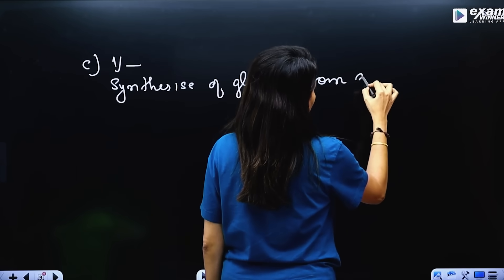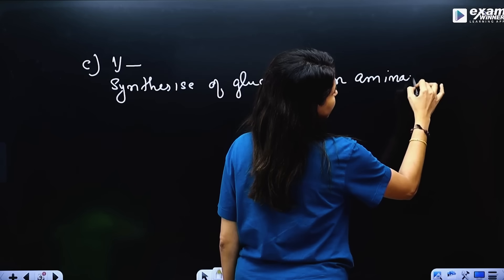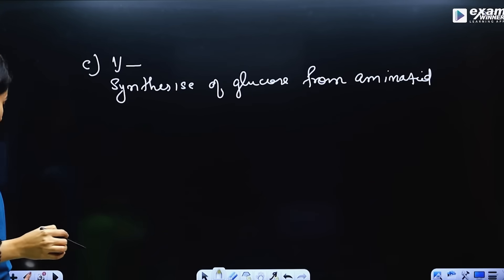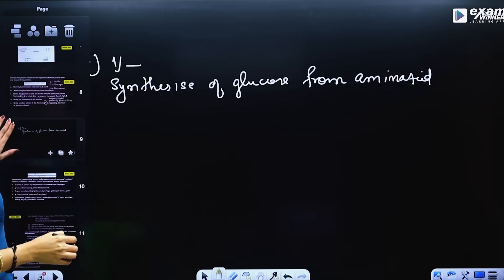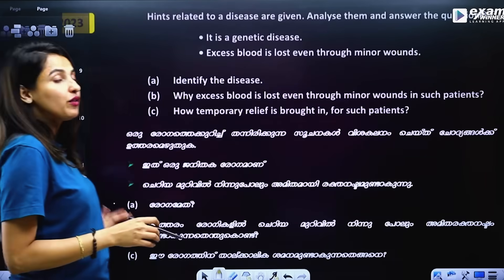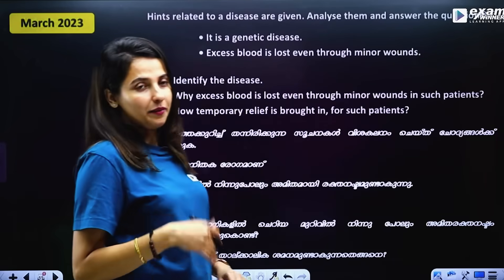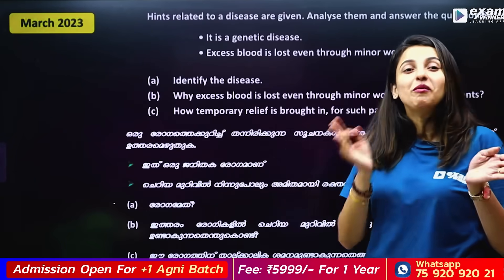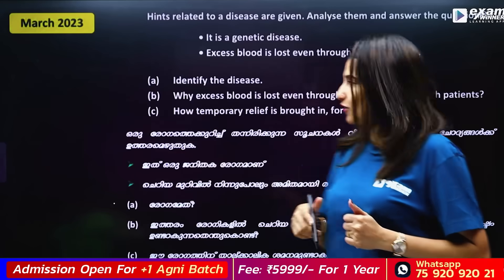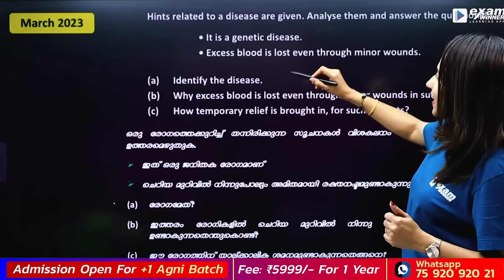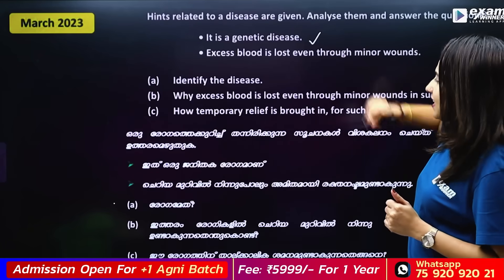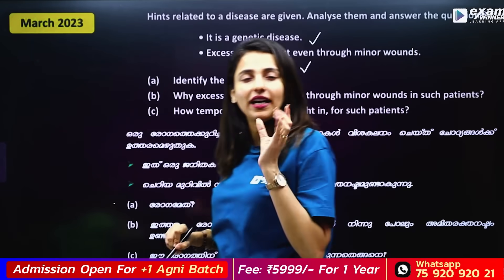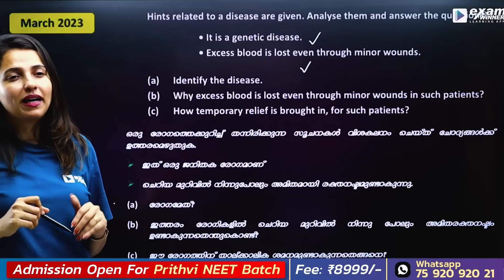What is the effect? Glucagon promotes synthesis of glucose from amino acids and releases glucose into the blood, thereby raising blood glucose levels.